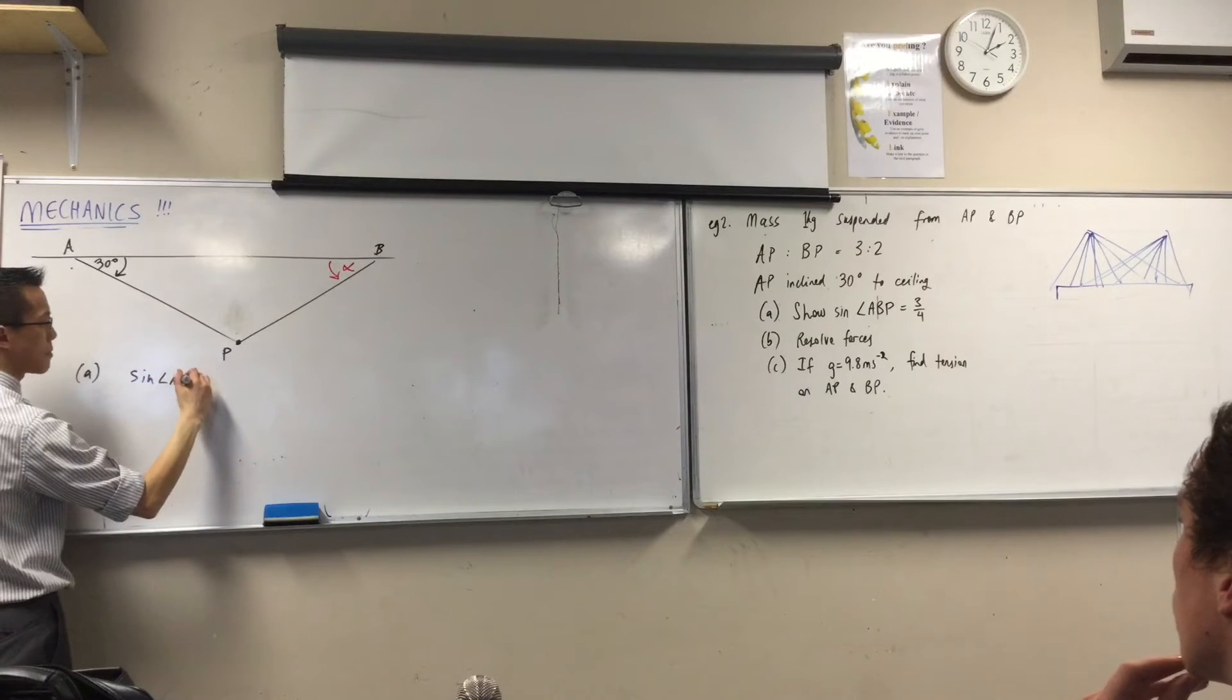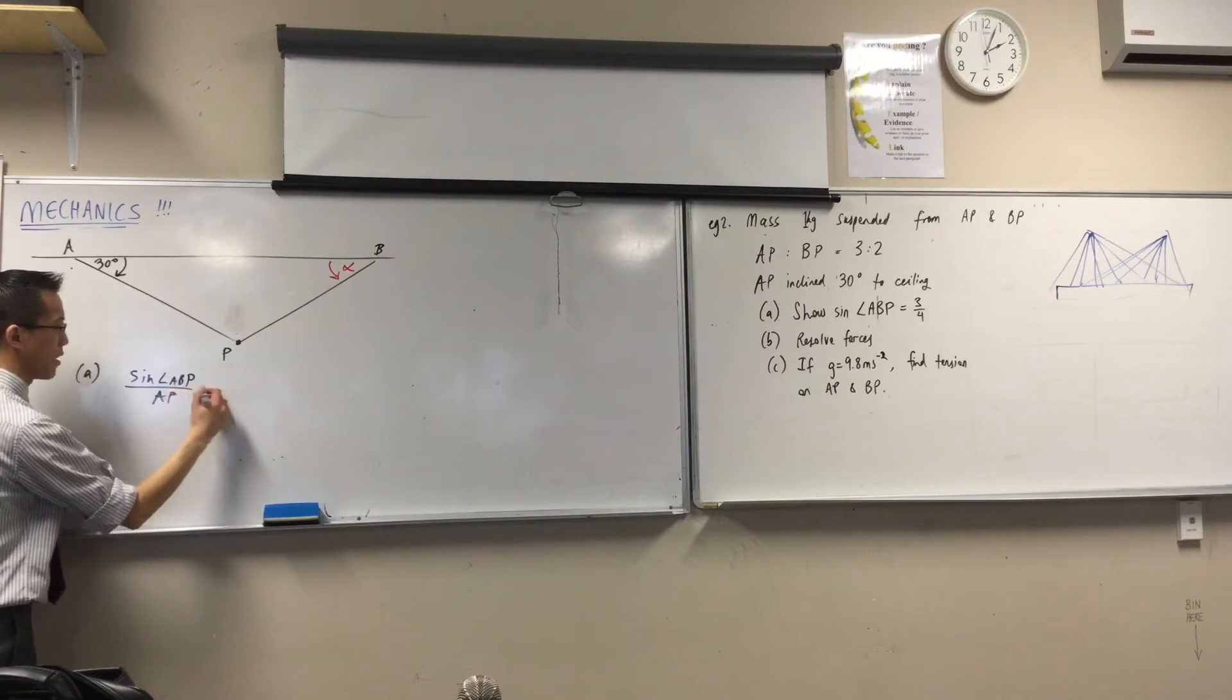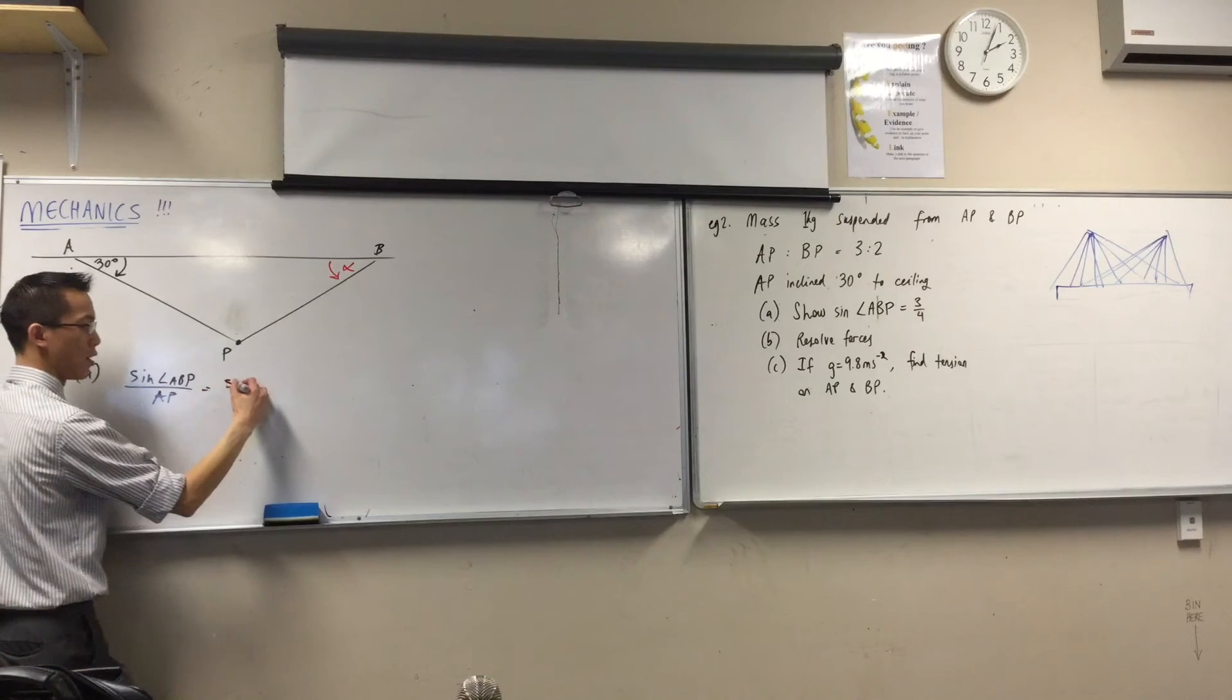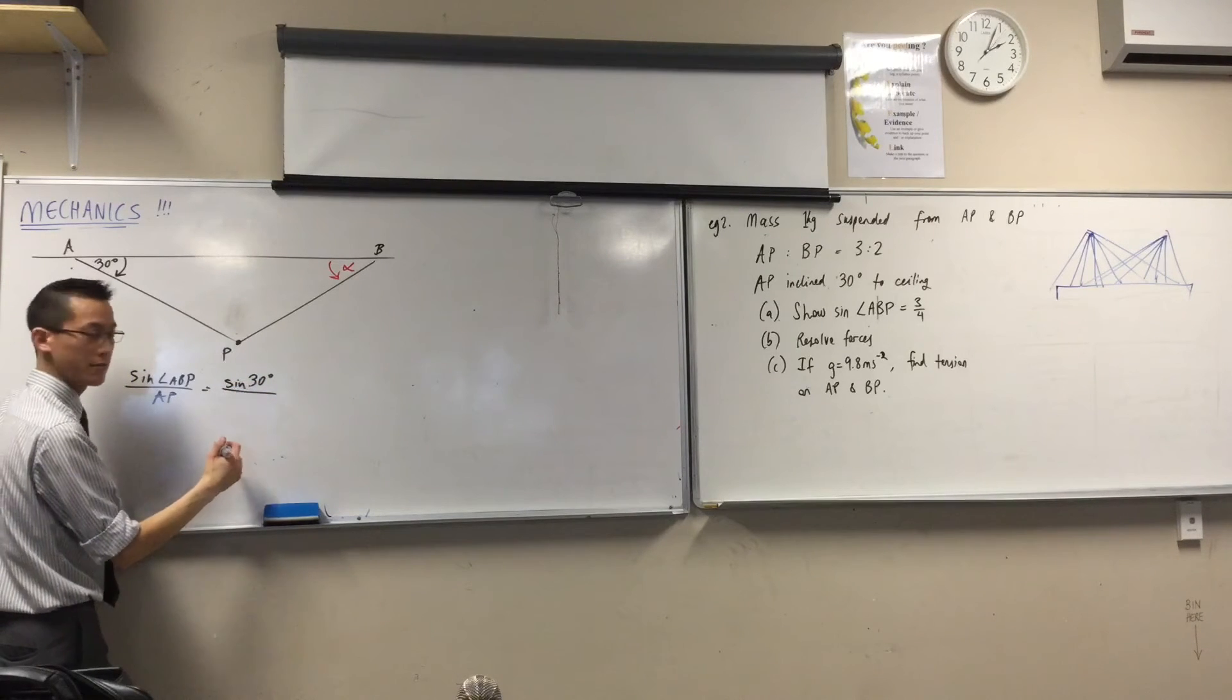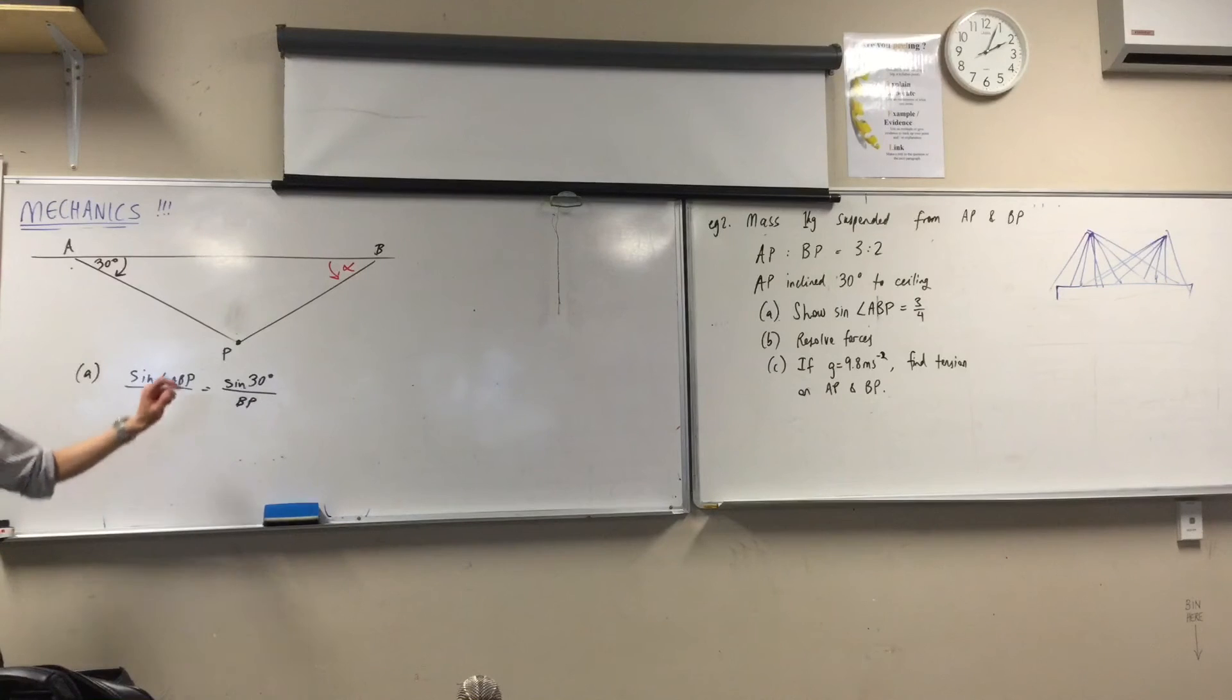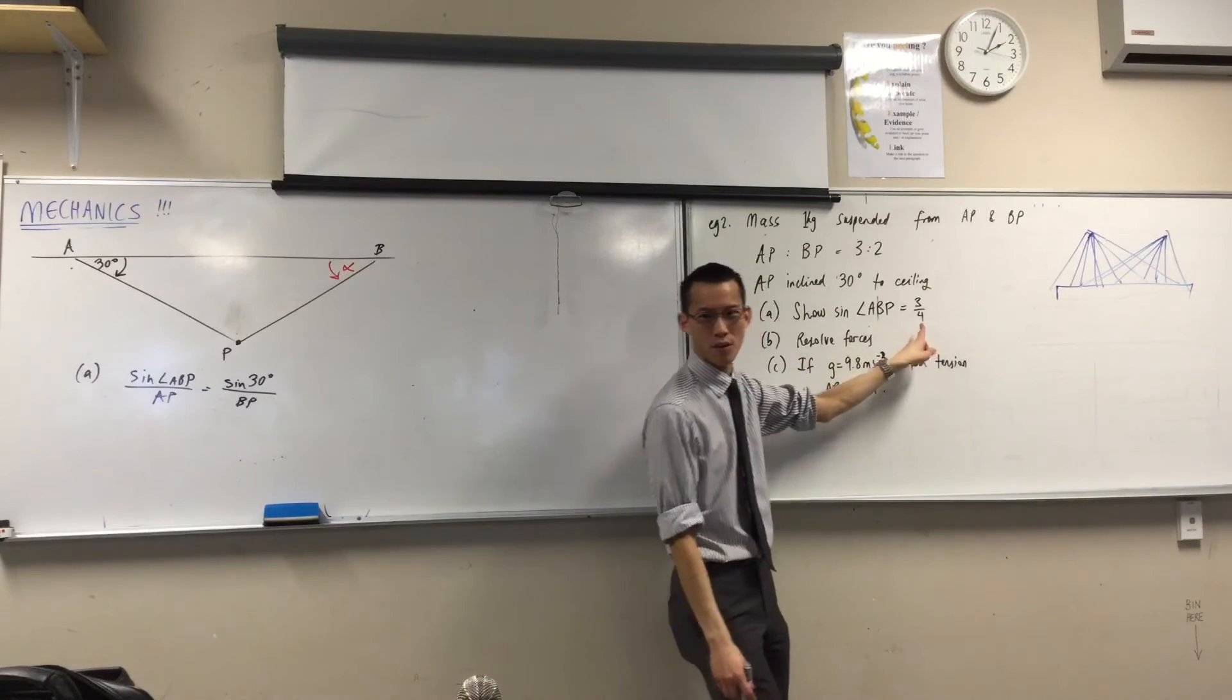Sine of ABP over what's the side that matches ABP? It's AP, right? It's equal to, so what's the corresponding ratio? Sine of ABP, that's the only other one I know, over ABP. Cool? So far, so good. Now, if you know what sine of 30 is, and look at the result you're trying to prove, where do you think this rabbit comes out from? What hat am I going to pull this out of?